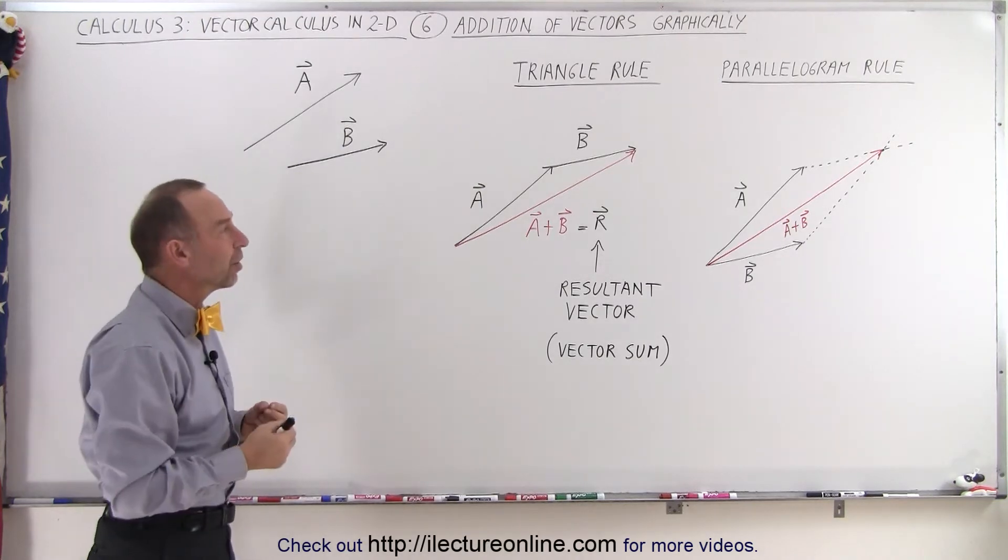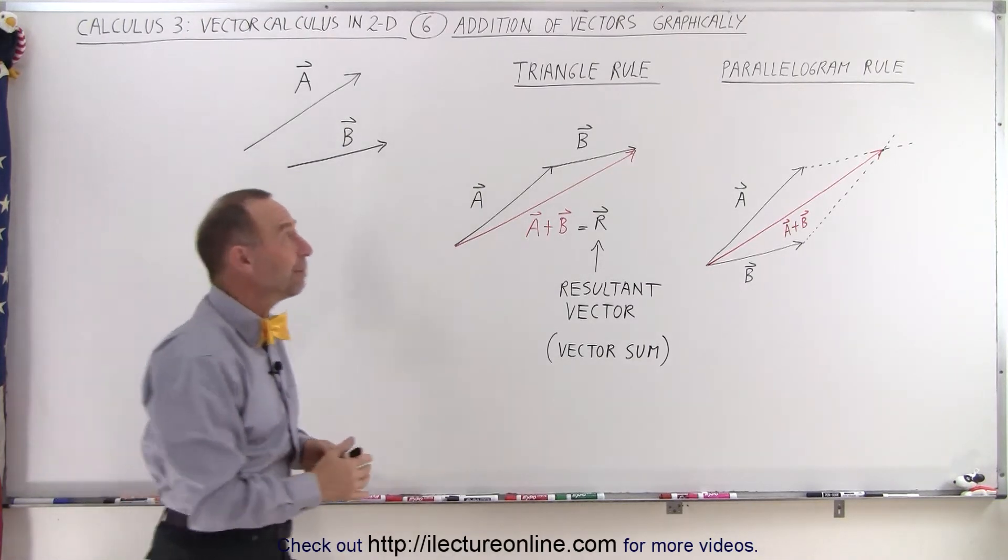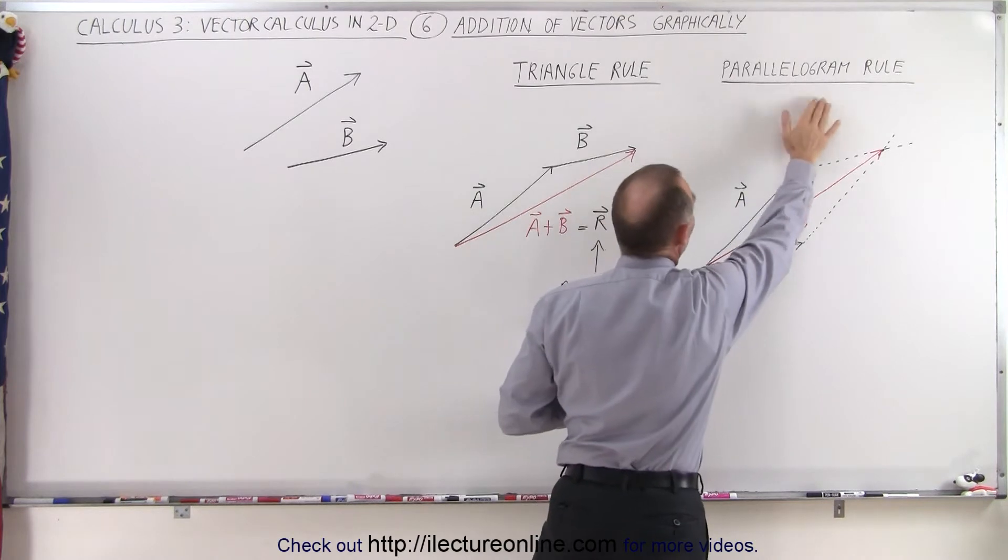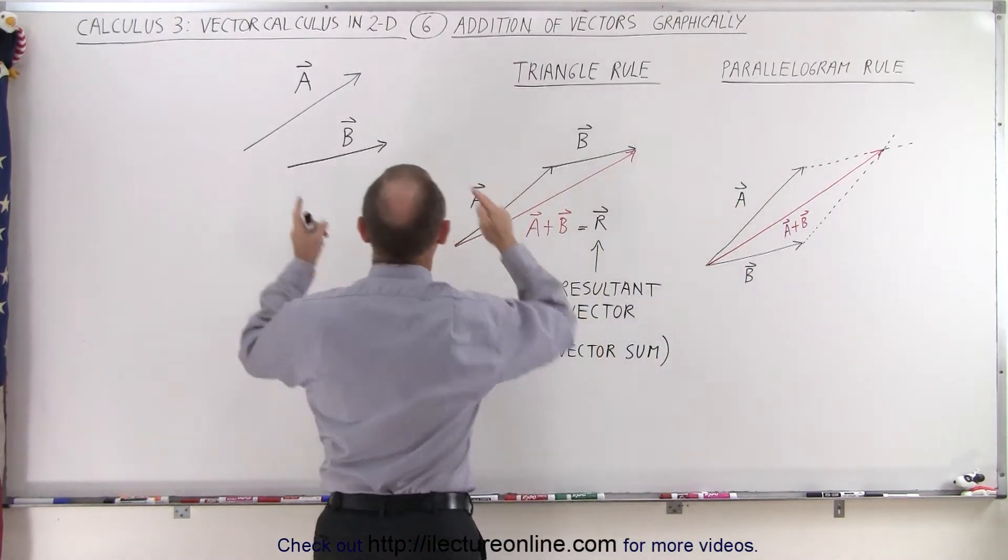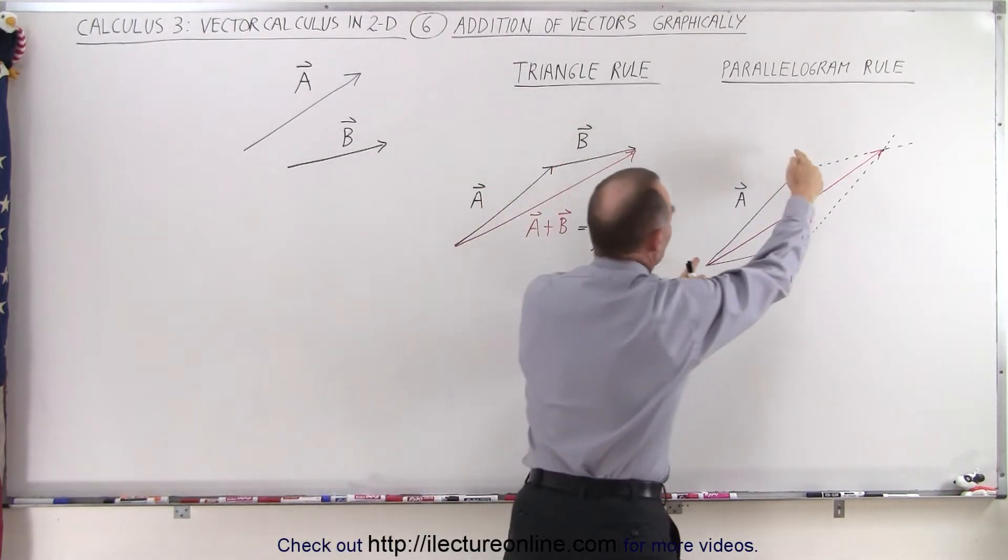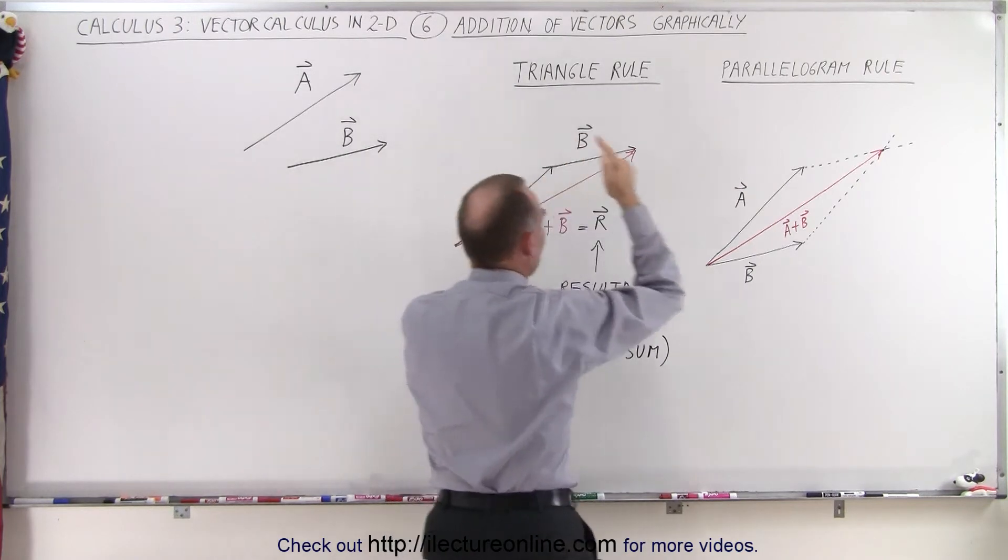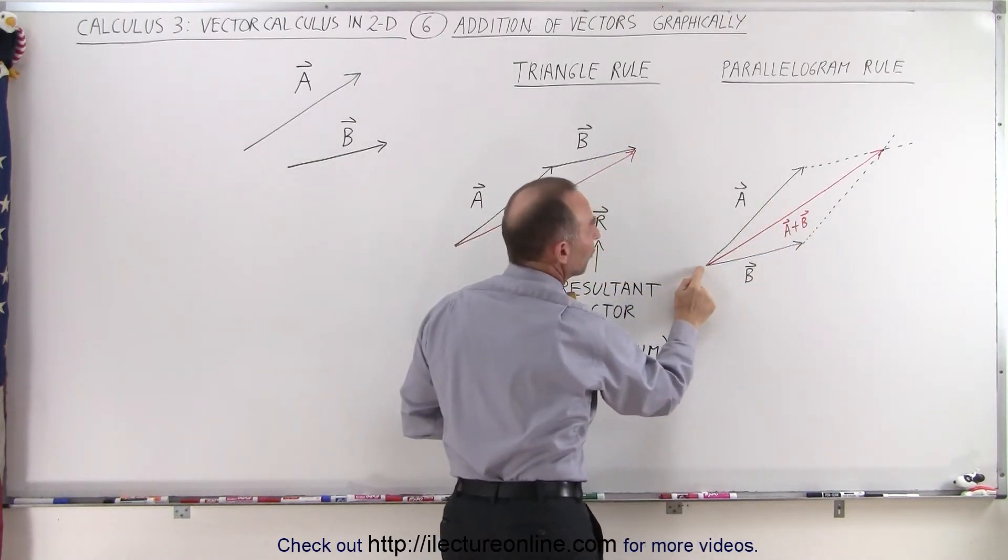We can get the exact same result by doing it slightly differently using what we call the parallelogram rule. What we do here is we take vector A and place it right there. Then we take vector B and place it right there so that the two tails of the vectors connect.